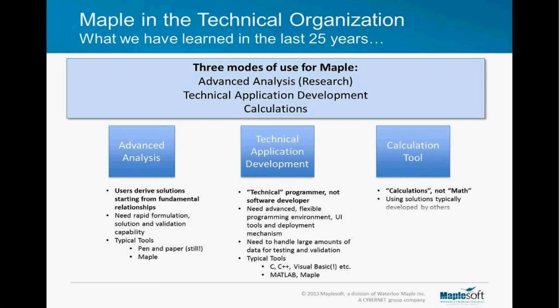The final mode is simply as a calculation tool — using equations typically derived from somewhere else. These can be simple or highly complex calculations carried out to support a design decision. Typical tools include pen and paper, Excel, and MathCAD. But now we're starting to see Maple being used as well. These three modes can be treated as standalone activities, but there is actually a natural flow: from initial concepts and basic research, turning these into a knowledge-based asset, developing a solution, and then deploying it throughout the organization.